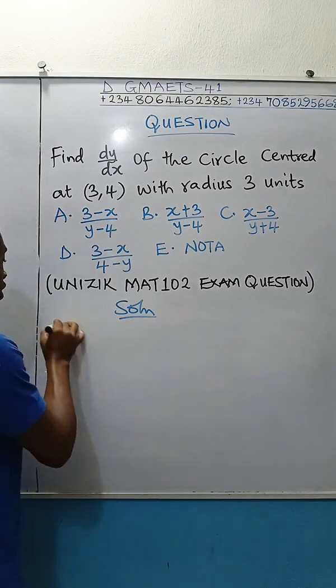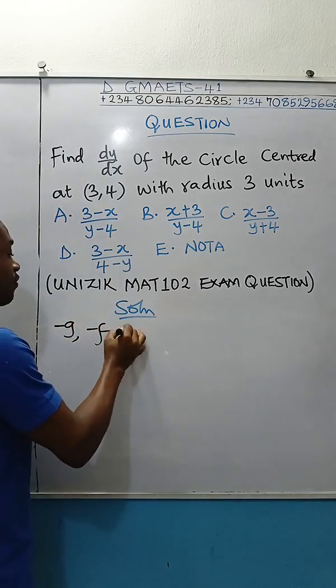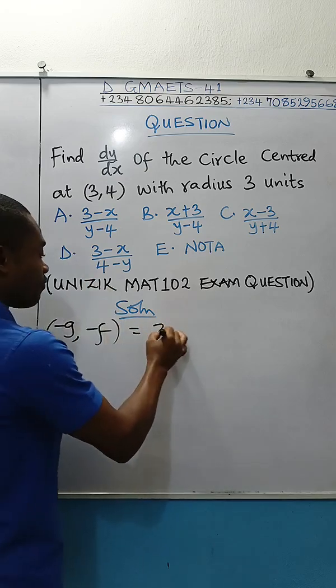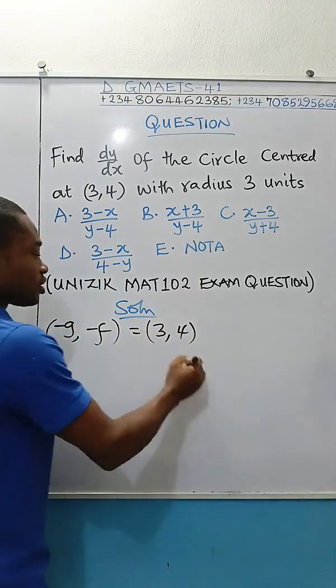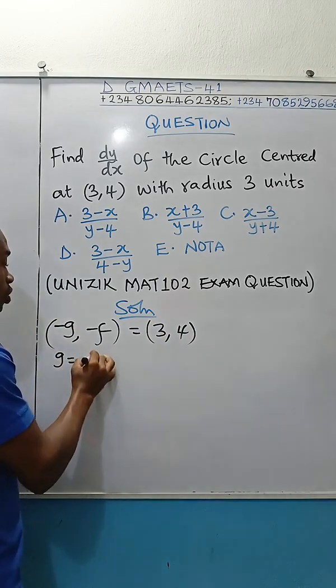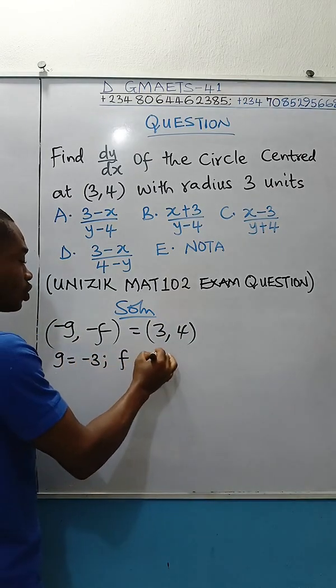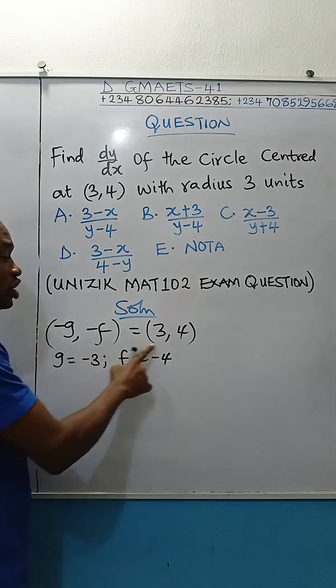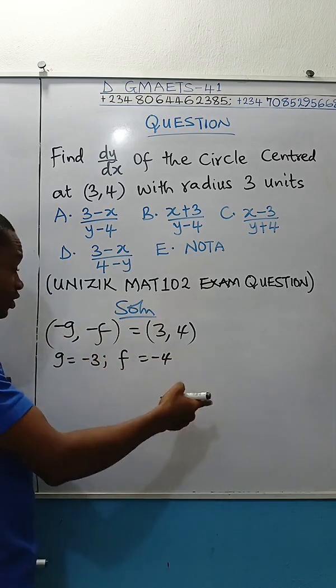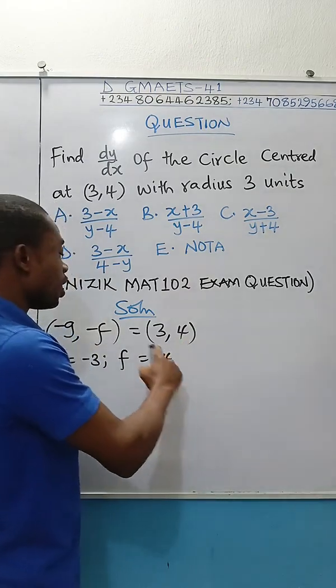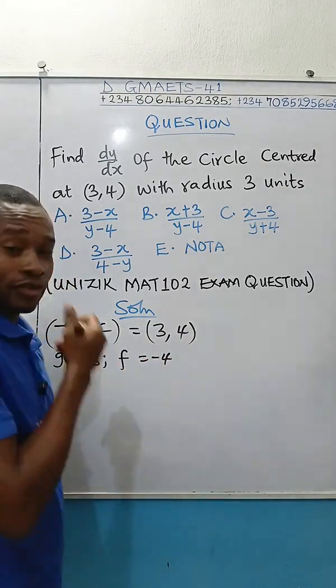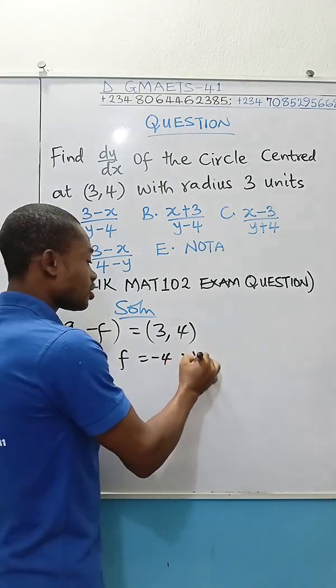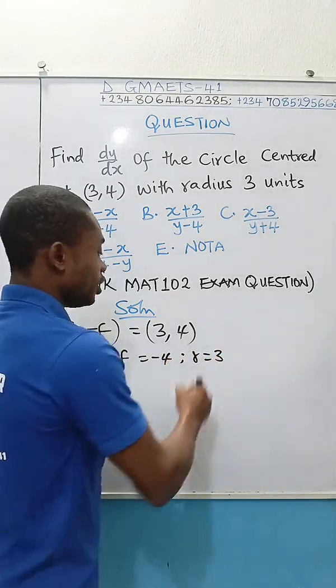We are given the center, so we can say that (-g, -f) is equal to (3, 4). What does this tell us? It simply means that g is equal to -3 and f is equal to -4. -g is equal to 3, so g will be -3. -f is equal to 4, so f will be -4.